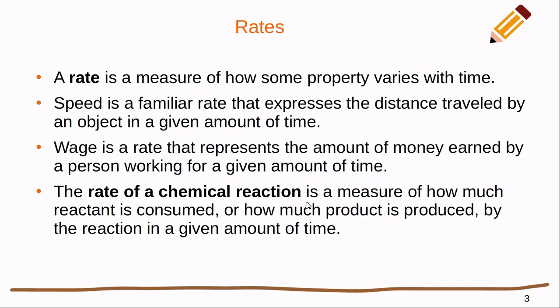The rate of a chemical reaction is a measure of how much reactant is consumed and how much product is produced. Remember that these two are tied - as reactants are consumed, we're producing products given a certain amount of time.